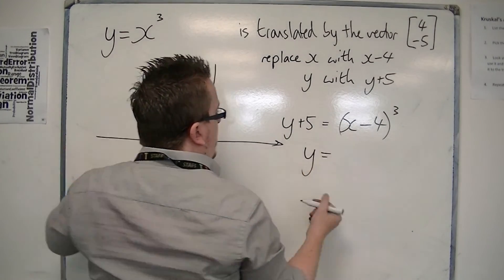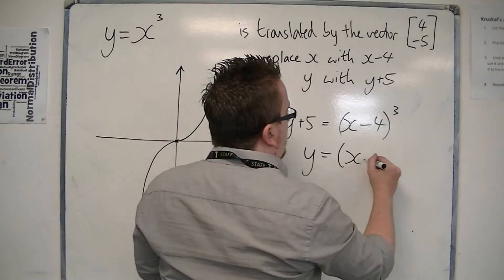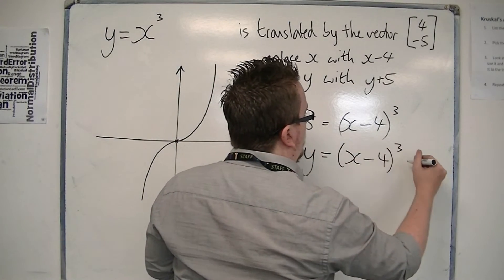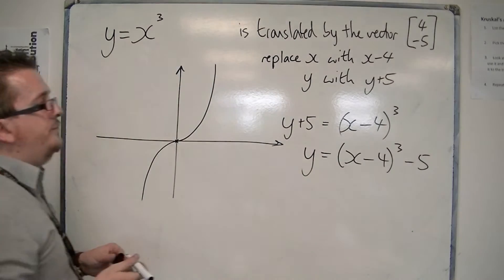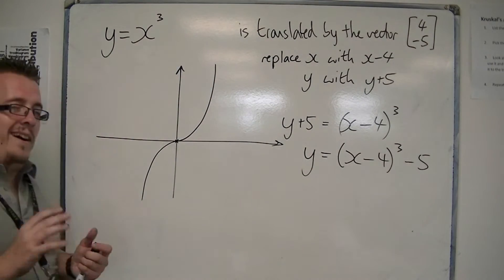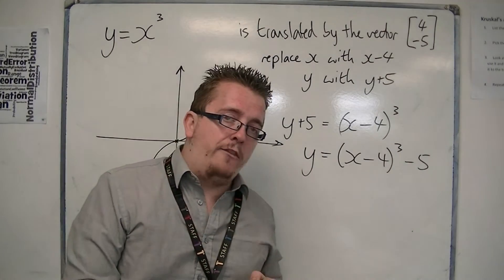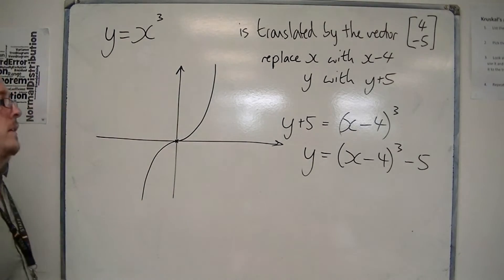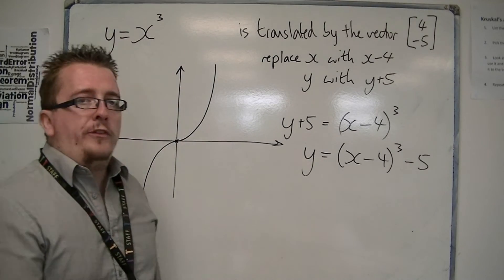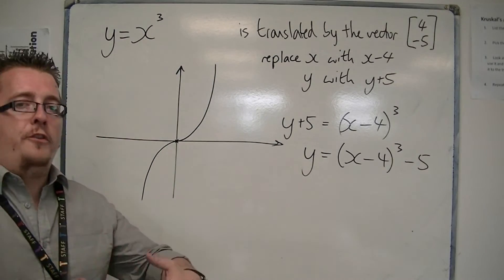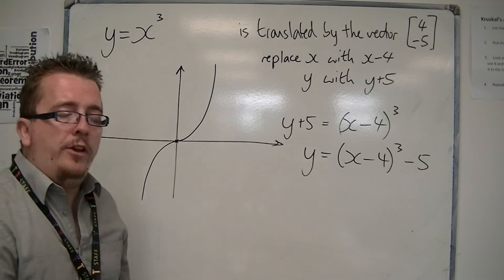So you could take 5 from both sides, and you could rewrite that as x minus 4 cubed, take away 5. So it's kind of like completed square form.